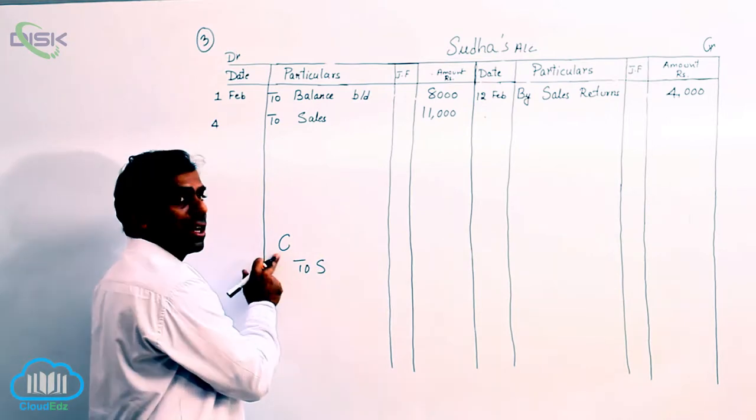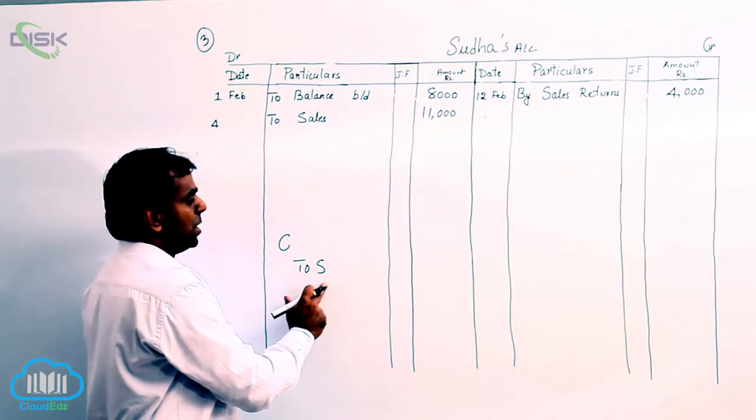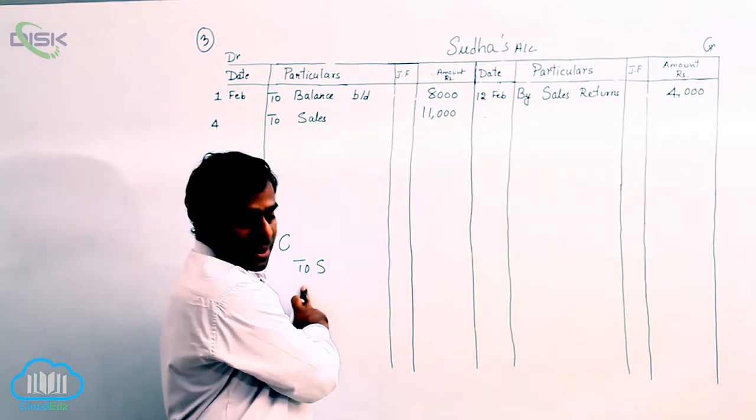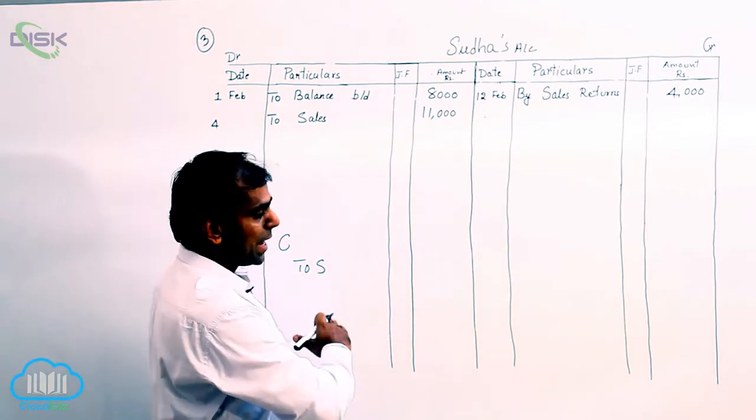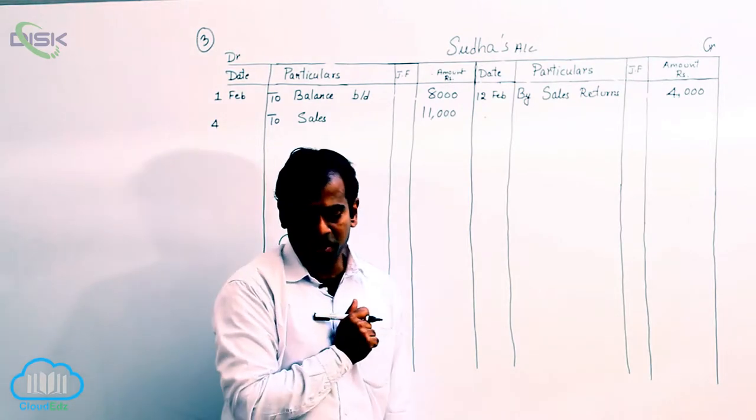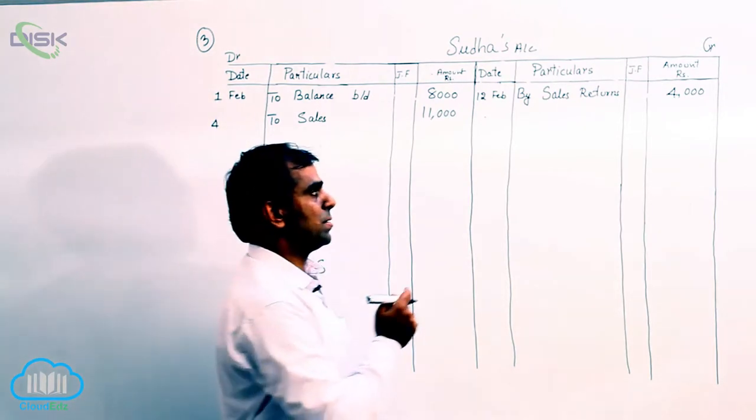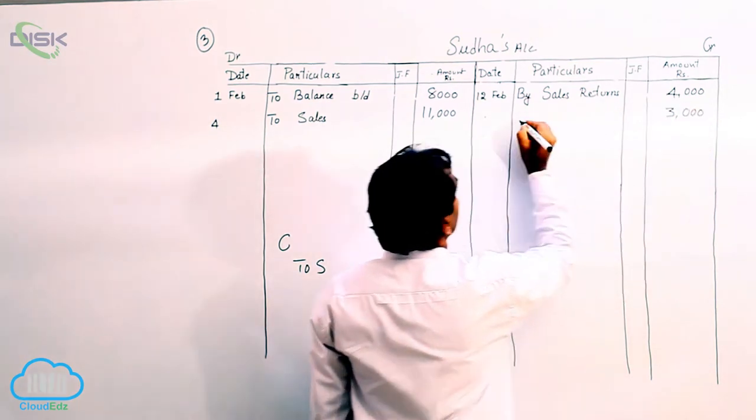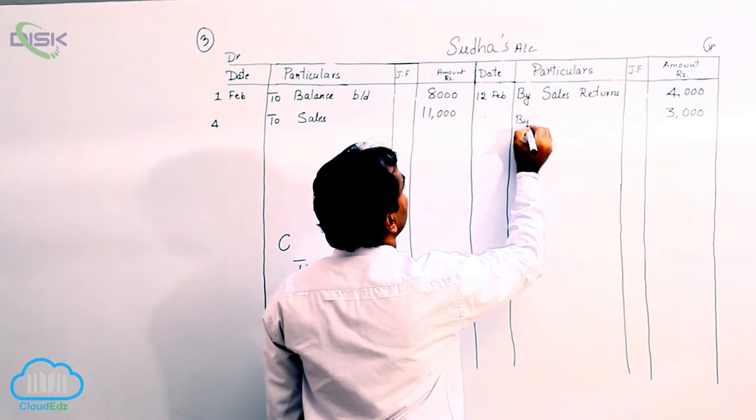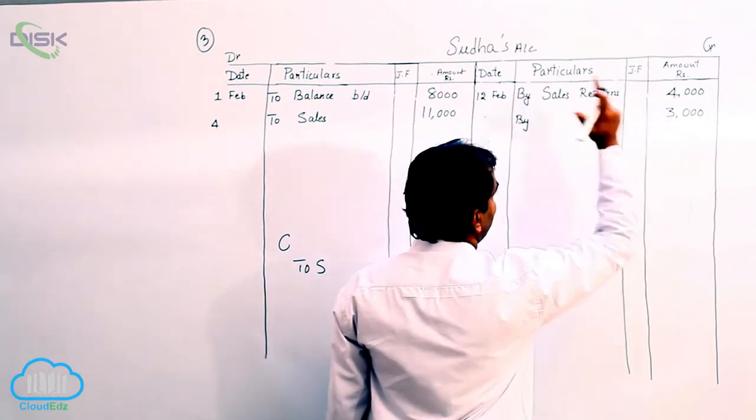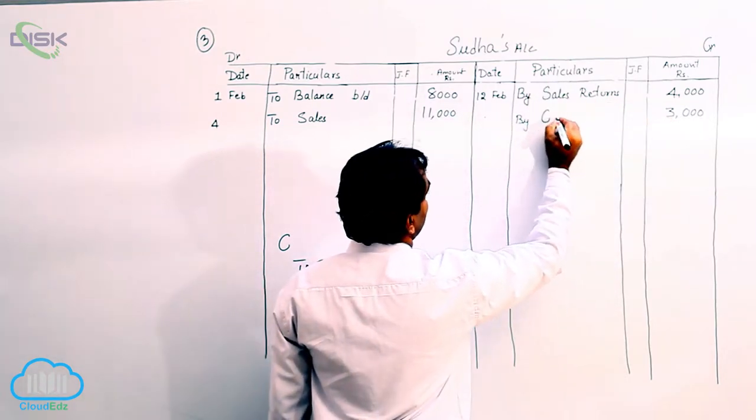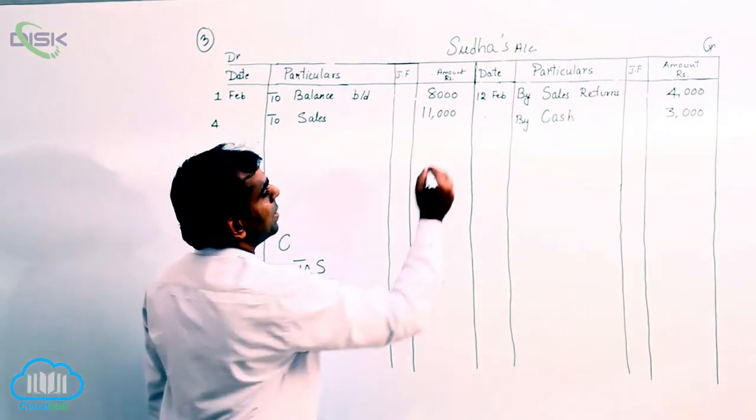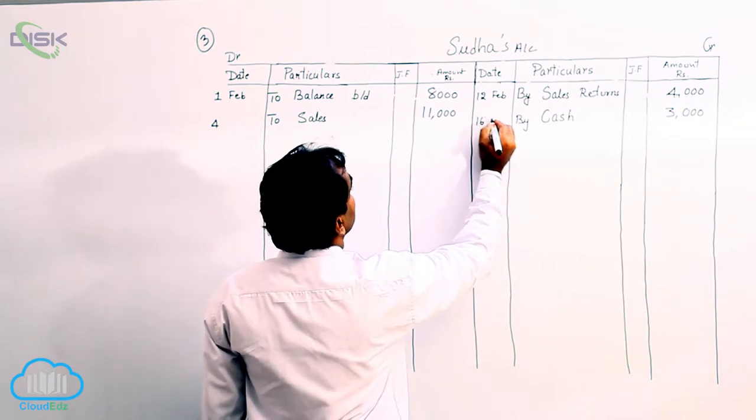So your journal entry would be cash account debit to Sudha's account. So in this journal entry, again we are crediting Sudha. As a result, what we need to do is again write the amount of cash what we got from Sudha on the credit side. So on credit side, we write 3000. Now you know by is a constant. Why are we crediting her account with 3000? Because we got cash. That is the reason you are writing in the particulars. Now, the date is 16th.